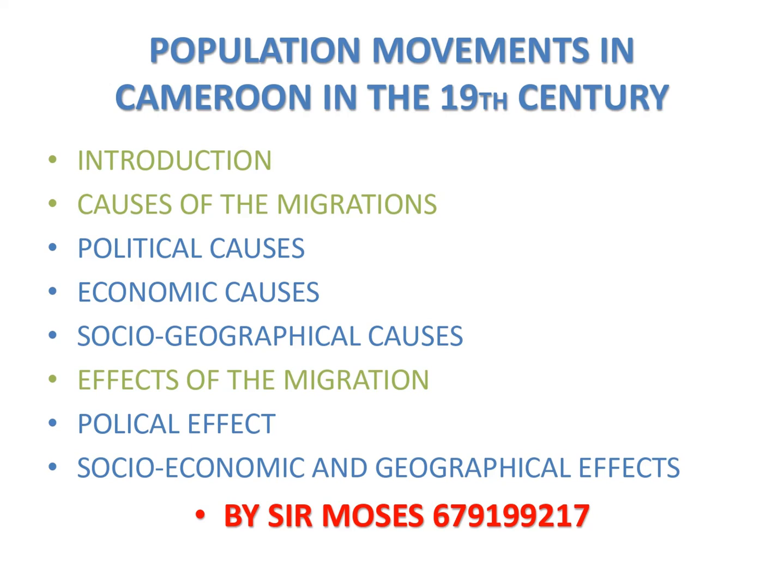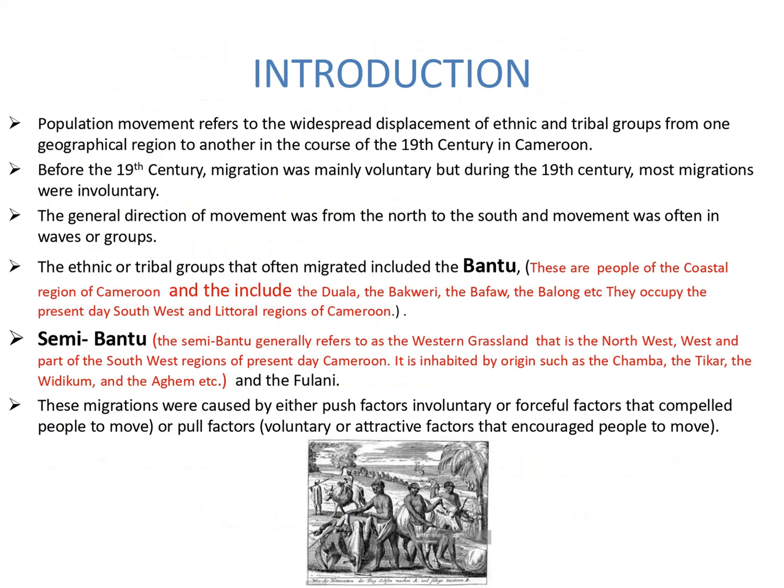With the introduction: population movement refers to the widespread displacement of ethnic and tribal groups from one geographical region to another in the course of the 19th century in Cameroon. Before the 19th century, migration was mainly voluntary, but during the 19th century most migrations were involuntary. The general direction of movement was from the north to the south, and movement was often in waves or groups.